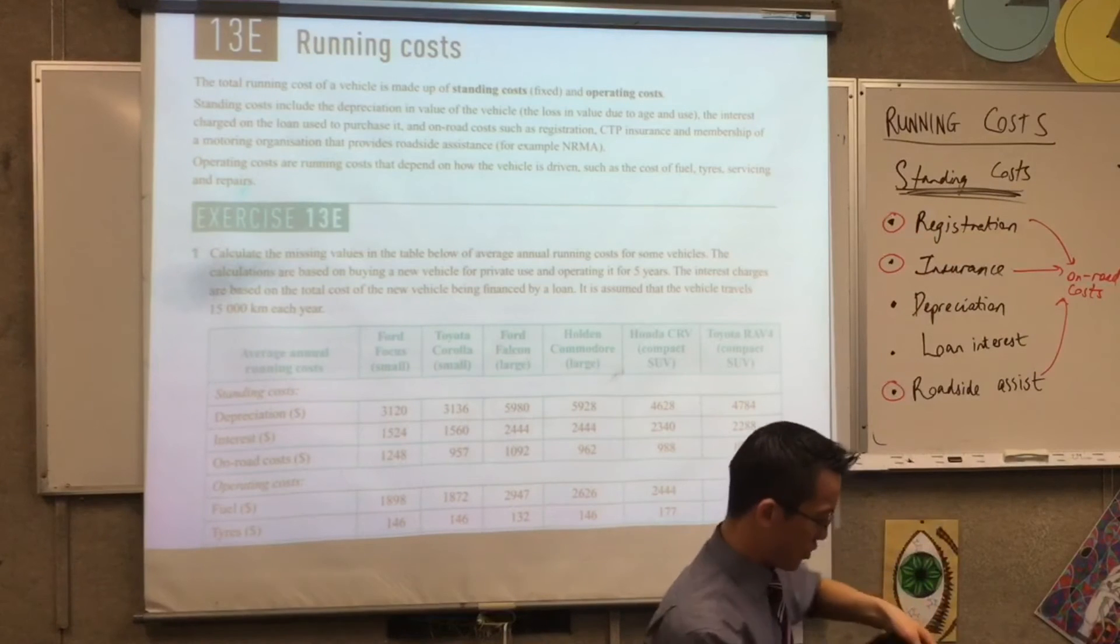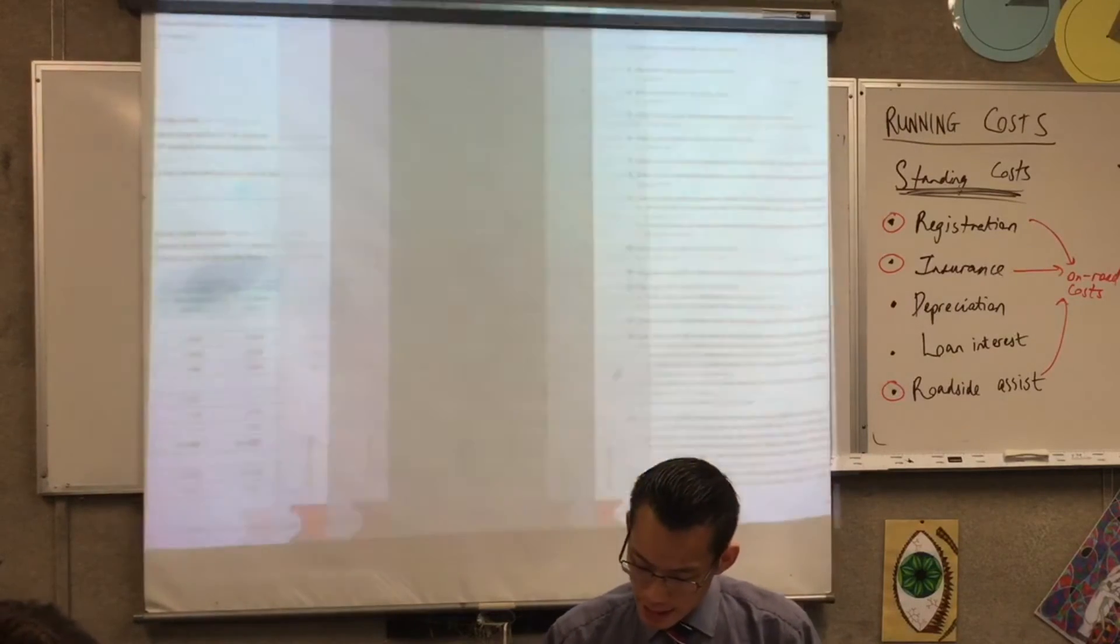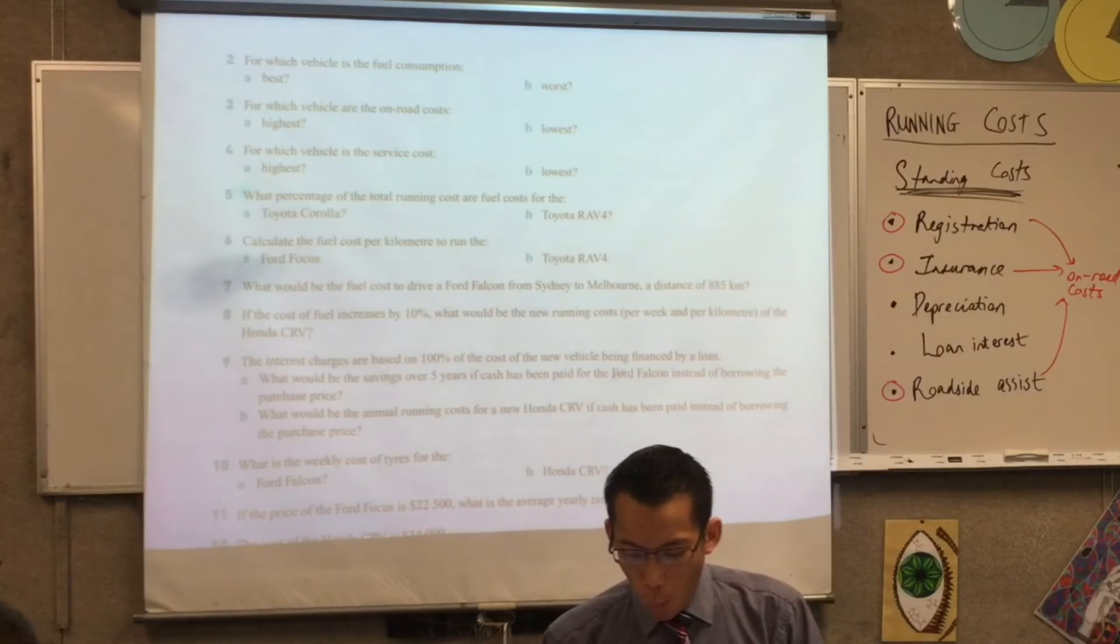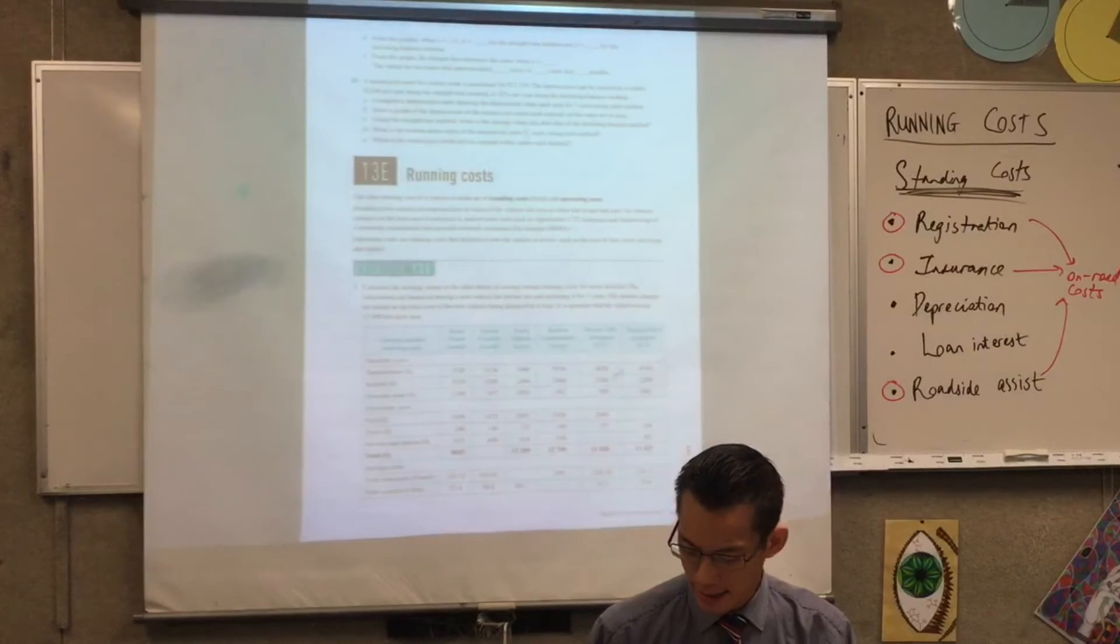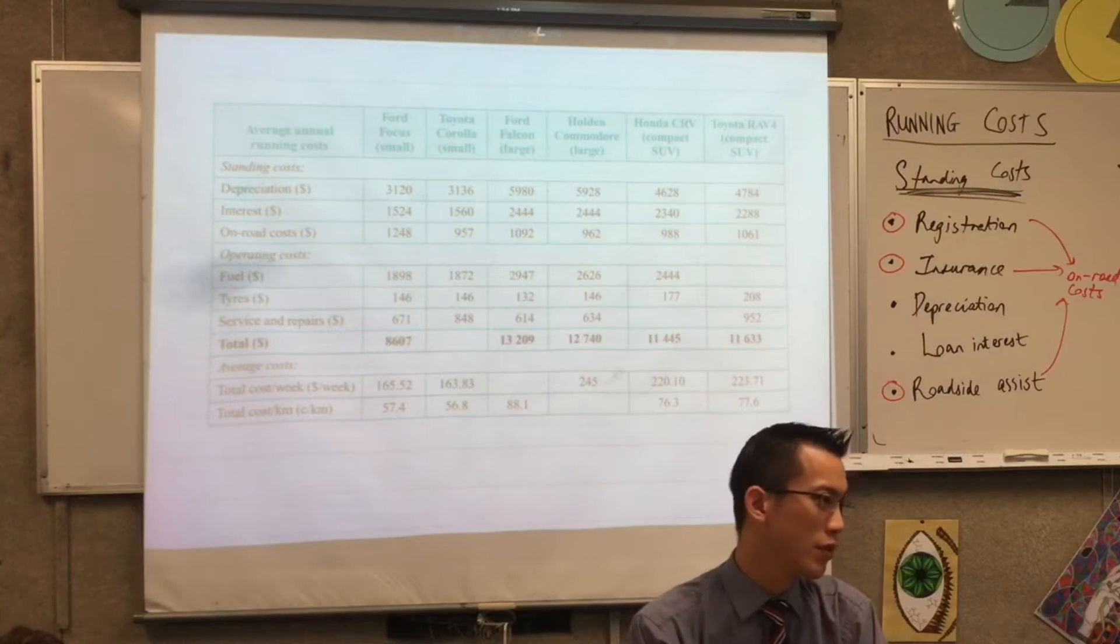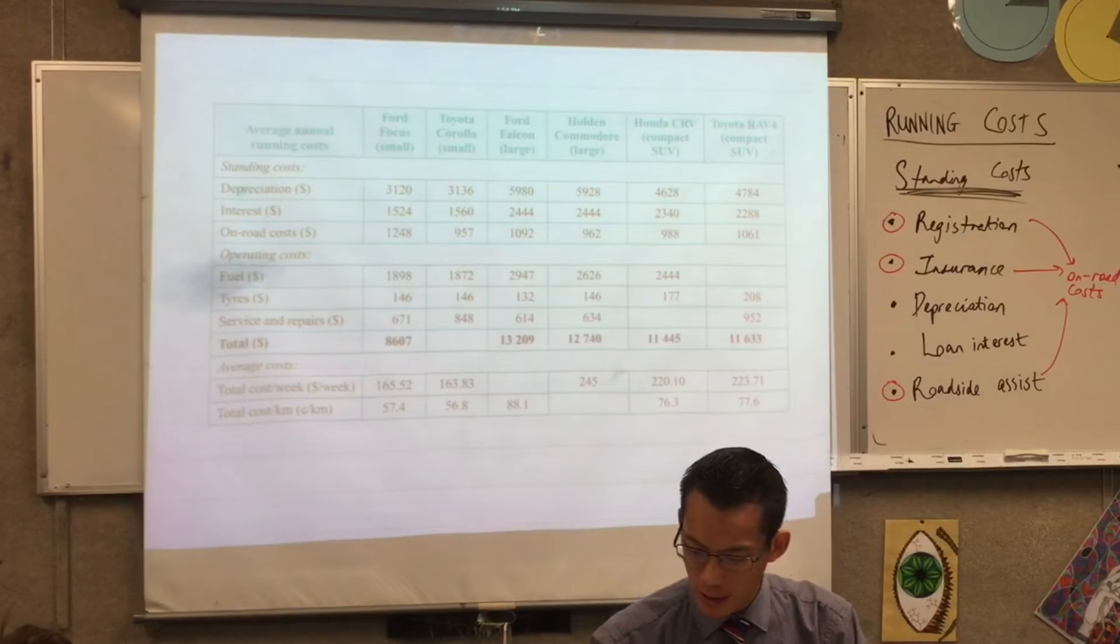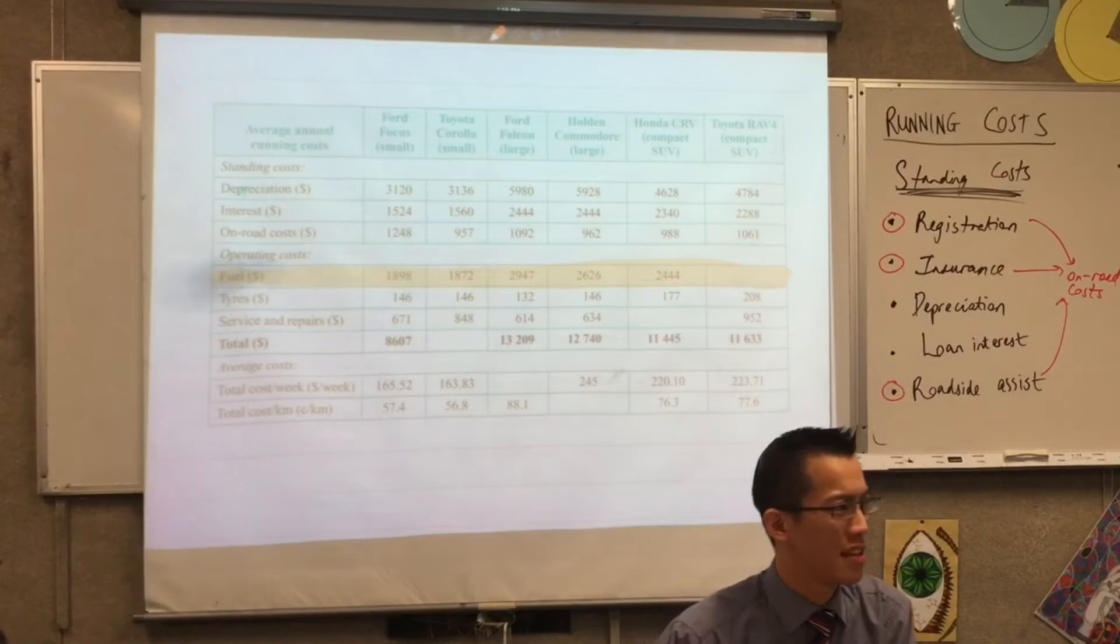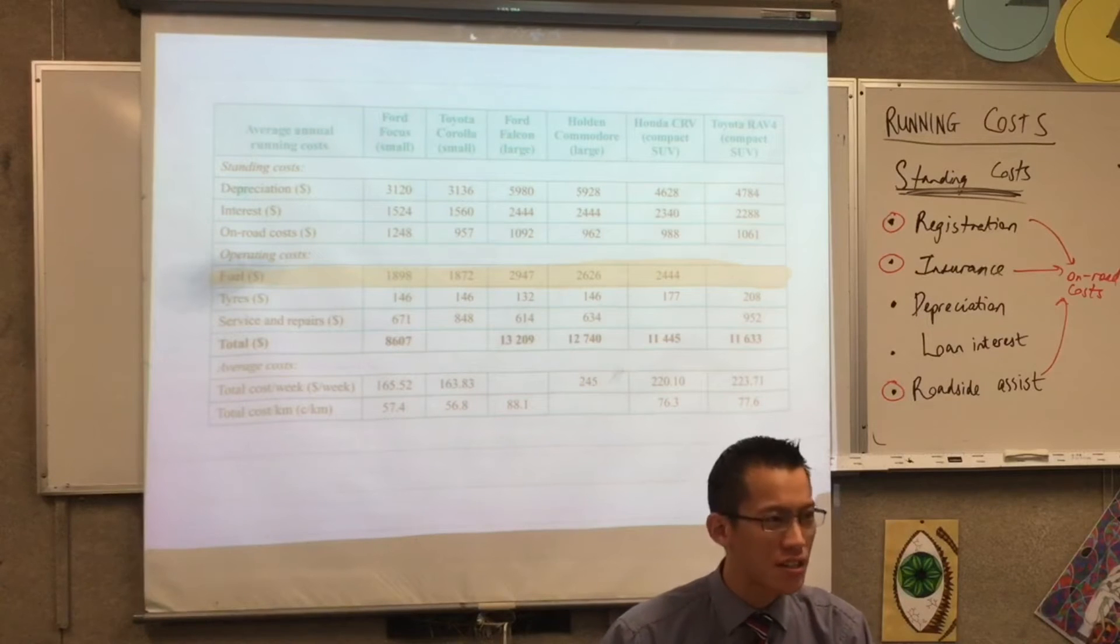We're going to do a small number of these questions together by interpreting this table. The first question we're going to look at is question 2: which vehicle has the best fuel consumption and the worst fuel consumption? So let's come back to this table. You want to look at this row along here - this is the amount that each car is expending on fuel. Now you'll notice there's a cell that's blank. What's that about?